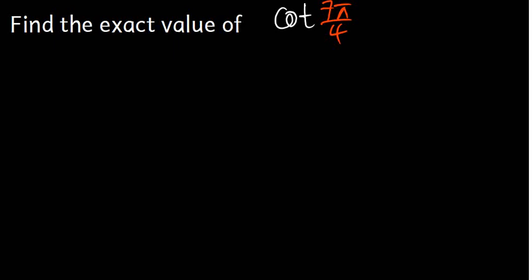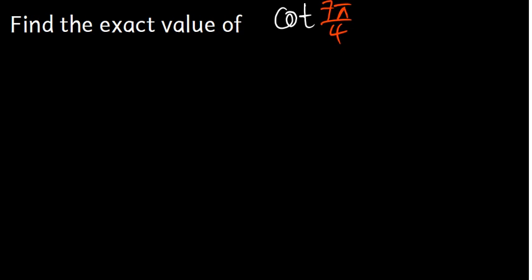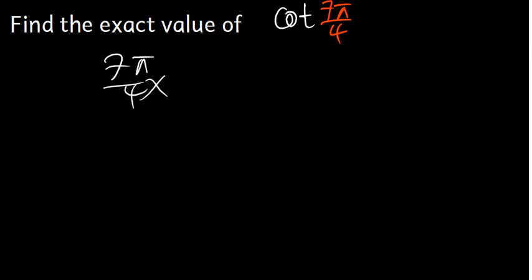Here is a question for you: find the exact value of cot(7π/4). So we need to find the exact value of this. What we're going to do is convert this angle from radians to degrees. To convert from radians to degrees, we take 7π/4 times 180 divided by π.